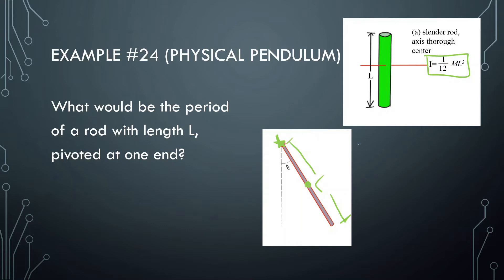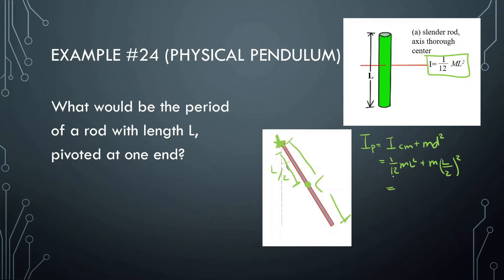To find the inertia at the end pivot, we're going to use the parallel axis theorem. You're going to use this a lot, especially for these kinds of physical pendulum problems. So the inertia at the end equals the center-of-mass inertia, which is (1/12)mL², plus M times d², where d is how far the center of mass is from the pivot — that's L/2. This simplifies to (1/12)mL² + (1/4)mL², which gives us (1/3)mL². That's the inertia at the end pivot, which we might have already memorized.